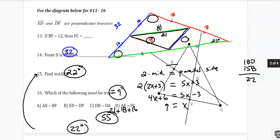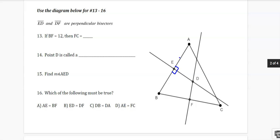Keep on going. Perpendicular bisectors. So ED is one. So this is perpendicular and it bisects. And DF is perpendicular and it bisects. So if DF is 12, that means that FC has to be 12. And point D, this is that magic special point where the perpendicular bisectors meet. It's called the circumcenter.